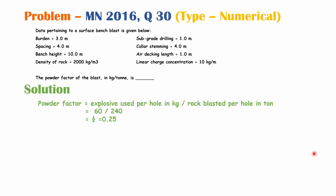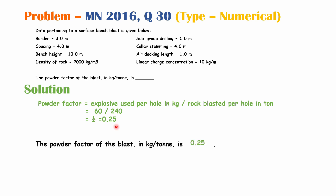Power factor equals explosive used per hole in kg divided by rock blasted per hole in tons. Explosive consumed per hole = 60 kg, rock blasted per hole = 240 tons. So power factor = 60 ÷ 240 = 0.25 kg/ton. The power factor of the blast is 0.25 kg/ton.